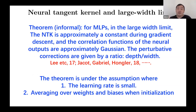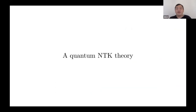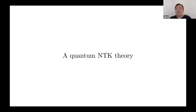This theorem assumes that the learning rate is small and that we average over weights and biases to compute expectation values. The definition of the neural tangent kernel involves the neural network output's correlation function averaged over weights and biases during initialization. This is a brief introduction to neural tangent kernel theory. Now I will talk about how to generalize this theory to quantum.